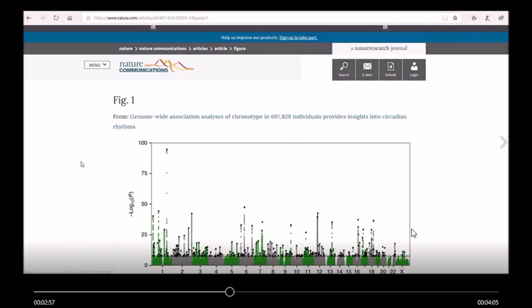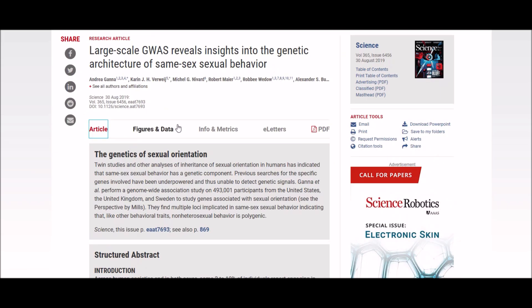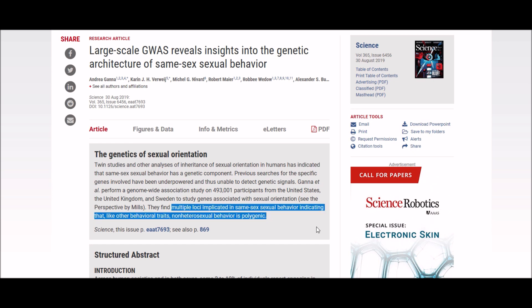In previous videos I've already given examples of where genome-wide association studies have been done. For example, with chronotype and also with obesity. But this paper here is a recent paper that's also done a genome-wide association study with loci associated with same-sex sexual behavior. My point is that they are happening all the time and can be done with many different phenotypes.